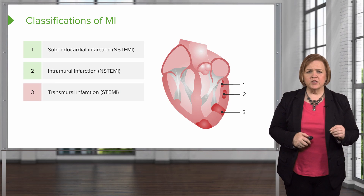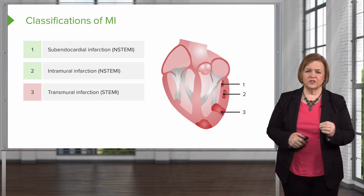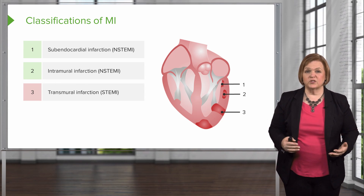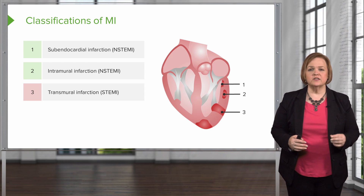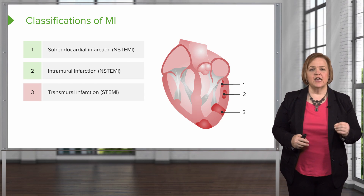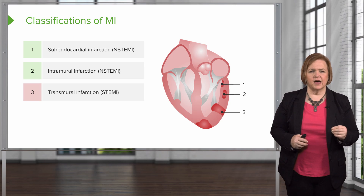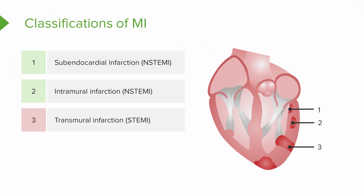Number three shows you a transmural infarction — this one is the most serious and has the highest risk of complications. That is a STEMI, an ST segment elevated MI, and you'll see it goes all the way through. You may hear people refer to it as a transmural infarction or a STEMI — same thing.